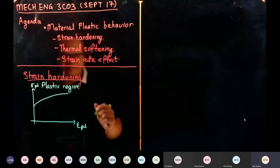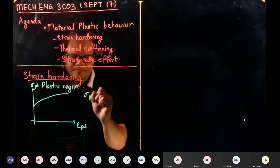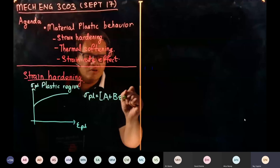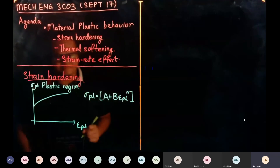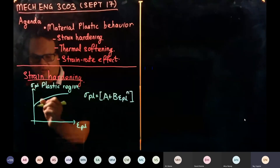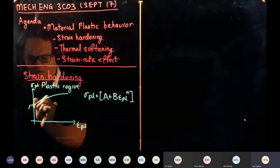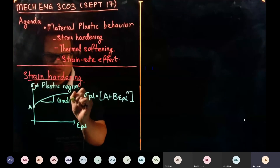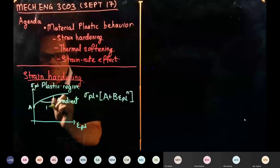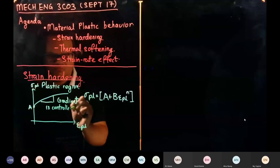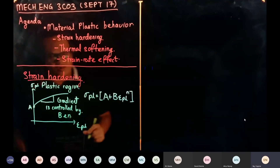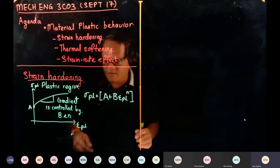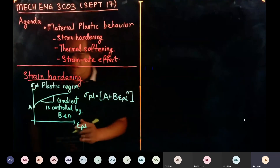The relationship we wrote last week is: σ_pl = a + b · ε_pl^n. By looking at this equation and this graph, we know that 'a' is the constant intercept, and the gradient — which describes the strain hardening behavior — is controlled by b and n together. We cannot isolate b versus n; they are coupled together.